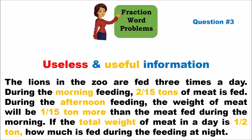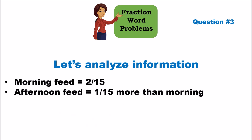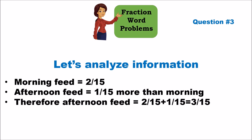There is no useless information here — everything is useful. Morning feeding is two-fifteenths. Afternoon is one-fifteenth more than the morning, so it's two-fifteenths plus one-fifteenth, which is three-fifteenths. The total for the whole day is one-half. We need to find the evening feed.